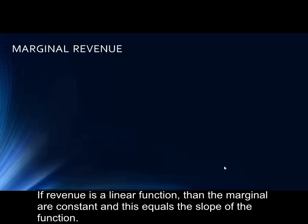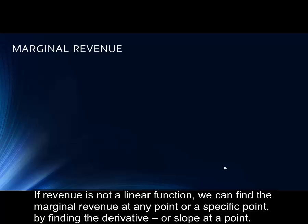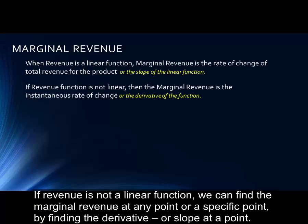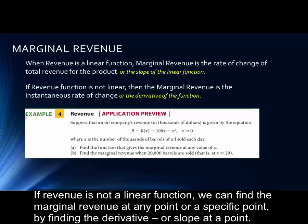If revenue is a linear function, then the marginals are constant, and this equals the slope of the function. If revenue is not a linear function, we can find the marginal revenue at any point or a specific point by finding the derivative or slope at a point.